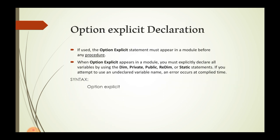The second type is Option Explicit declaration. If you use the Option Explicit statement, it must appear in a module before any procedure. When Option Explicit is used, you must explicitly declare all variables using Dim, Private, Public, ReDim, or Static statements. Using an undeclared variable name causes an error at compile time. The syntax is: Option Explicit.